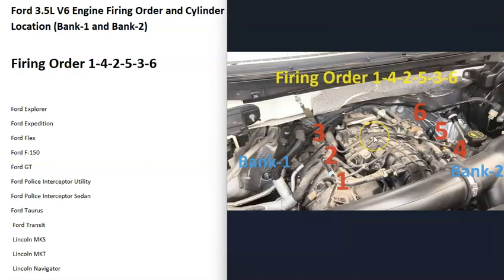Here's a Ford F-150 with a 3.5 liter V6. The firing order is going to be the same: 1, 4, 2, 5, 3, 6. The cylinder locations — when you open the hood and look directly at the engine — on the left side is going to be 1, 2, 3, and then over on the other side is going to be 4, 5, 6.